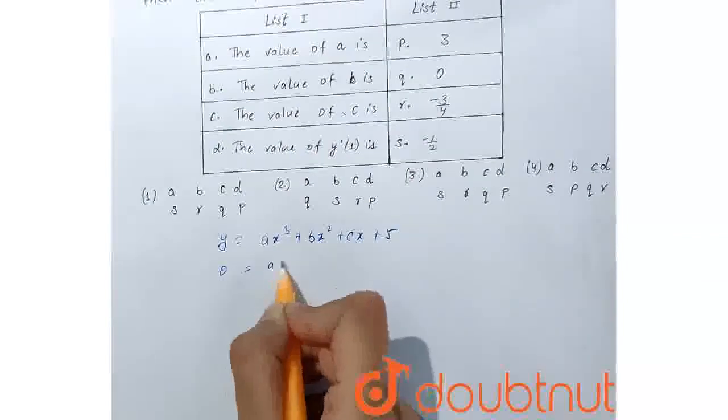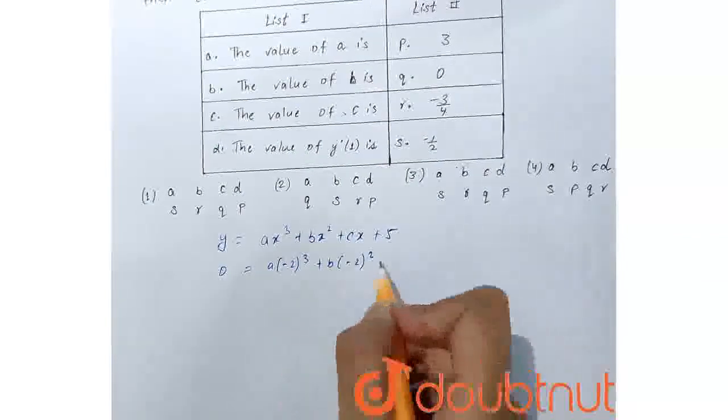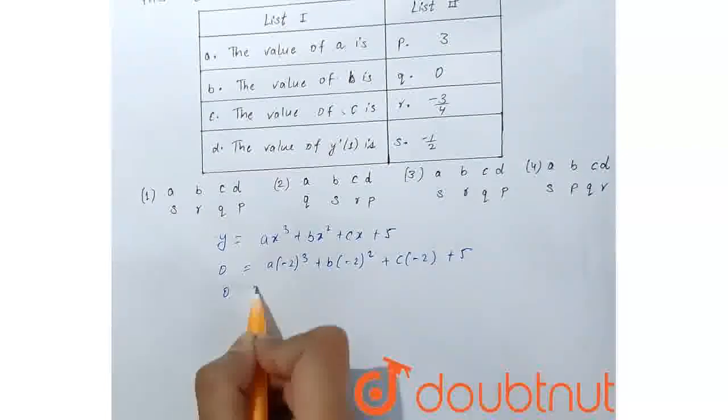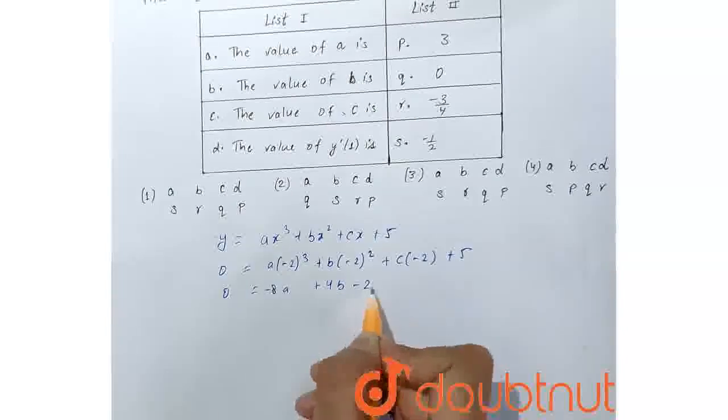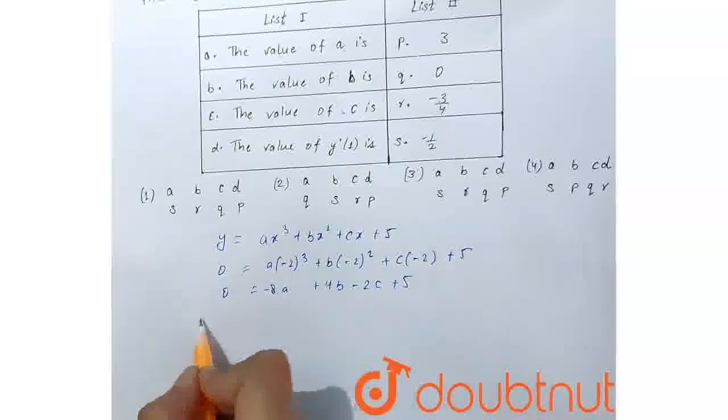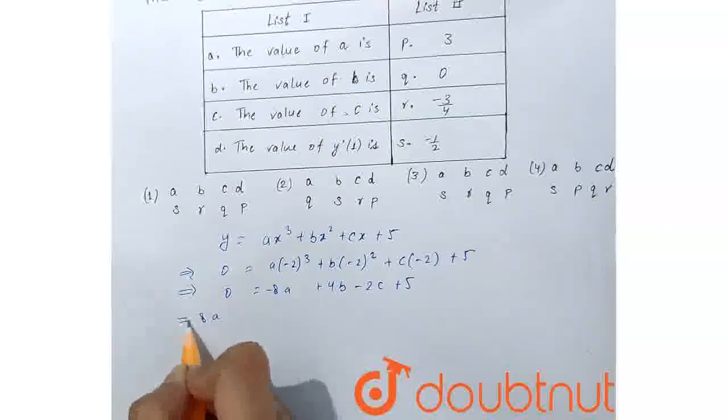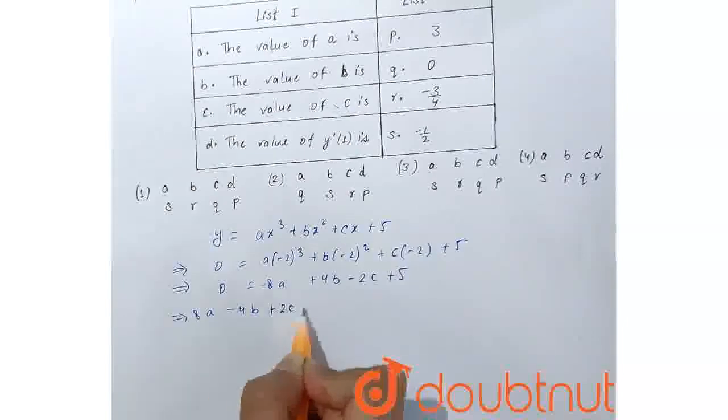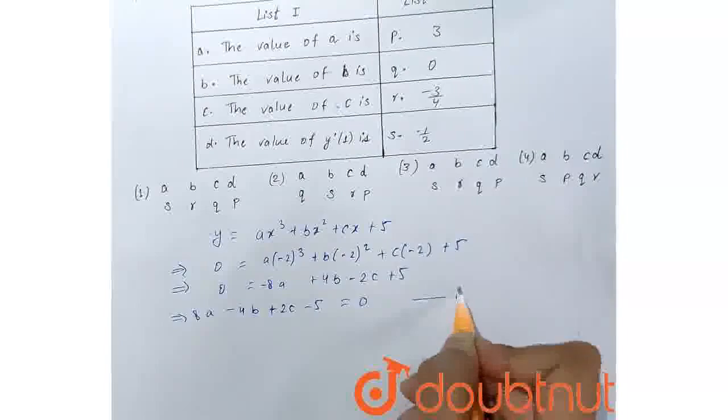So, 0 equals a(-2)³ plus b(-2)² plus c(-2) plus 5. So, 0 equals -8a plus 4b minus 2c plus 5. So, 8a minus 4b plus 2c minus 5 equals 0. Suppose this is equation 1.